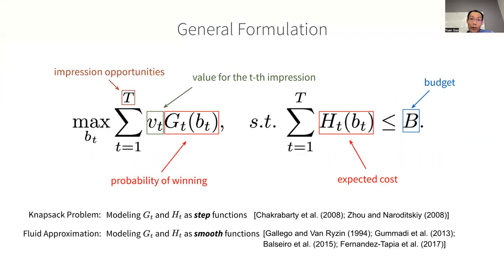So for each ad, we formulate a problem like this. The goal is to maximize the number of results subject to budget constraint by choosing a proper bid, bt, in each auction. Suppose there are a total of big T impression opportunities or requests, and vt is the value for the t's impression.